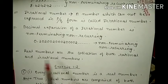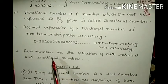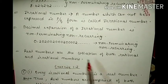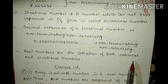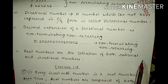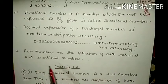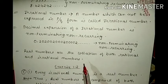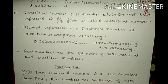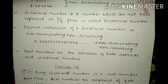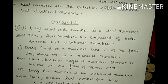Now, real numbers. Real numbers are the collection of both rational and irrational numbers — that means rational numbers and irrational numbers both combine to form real numbers.